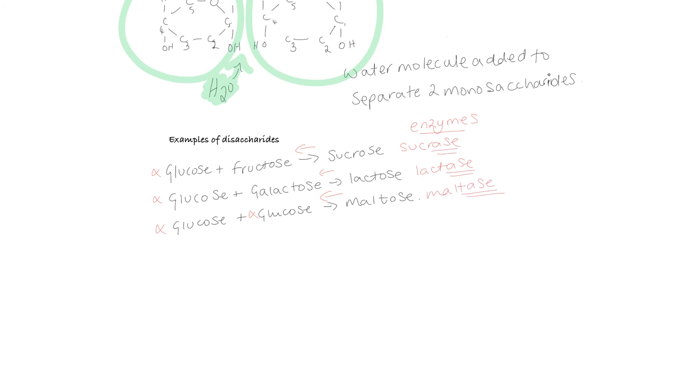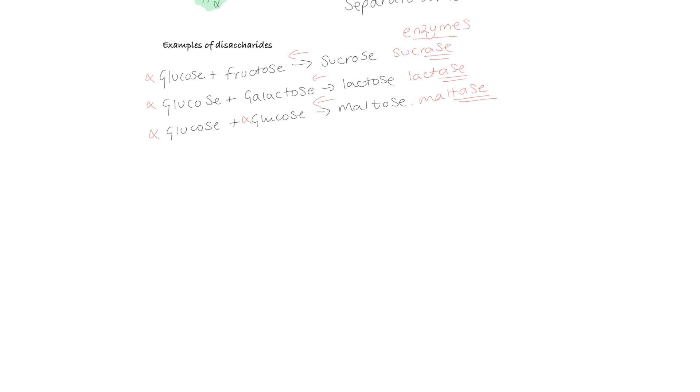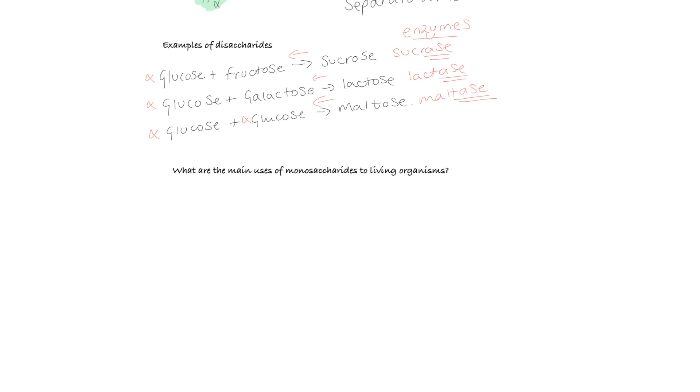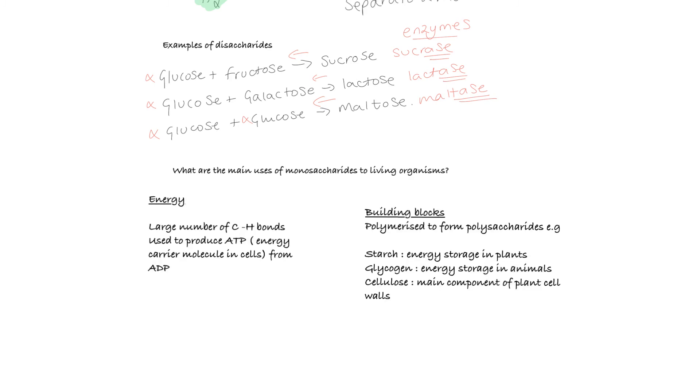The very final thing we're going to talk about today is what are the main uses of monosaccharides to all living things. Monosaccharides are used for two key things: energy and building blocks. They're really useful for energy because they have a large number of carbon-hydrogen bonds. When you learn about respiration later in the second year, you'll learn that respiration is taking that energy out of the carbon-hydrogen bonds and putting them into another molecule to produce ATP from ADP. They're really useful to convert ADP into ATP in order to release energy for use in metabolic reactions.